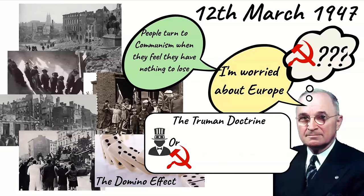In his speech Truman said that countries faced a choice between capitalism and communism. He said that communism was evil because the people were not free. Truman believed that the USA should stop the spread of communism. This policy was called containment.